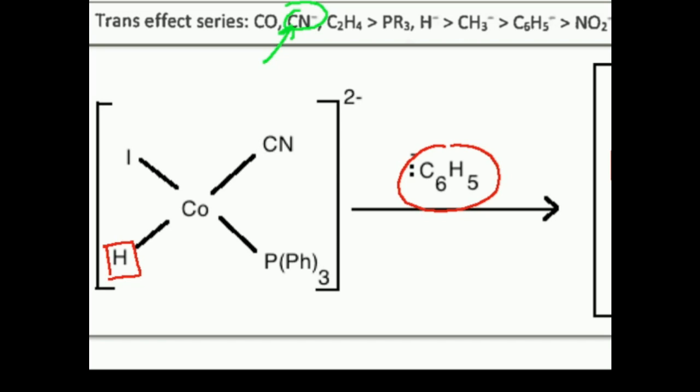So my question is, to check your understanding, let's say I have a square planar complex. Let's suppose I have a metal with ligand A, ligand B, ligand C, and ligand D. And let's say I want to react this with ligand E.